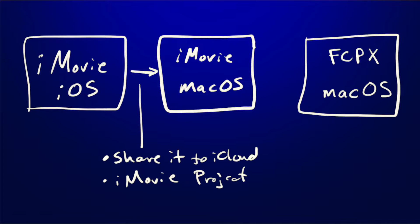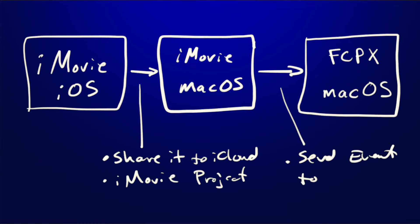Then you open that project in iMovie for macOS and send it to Final Cut Pro X by selecting the Send Event to Final Cut Pro command, which is located in the file menu. By following these steps, you end up with a new library in Final Cut Pro X with your project and raw video clips. I'll see you next time.